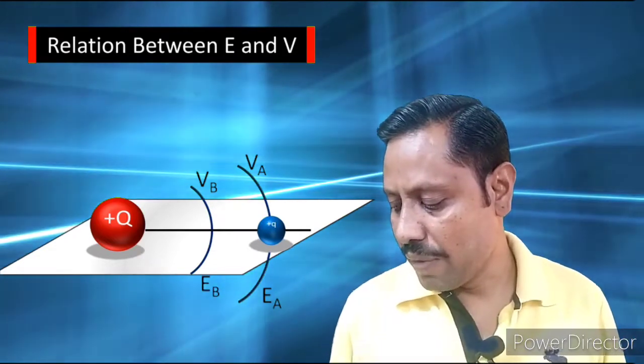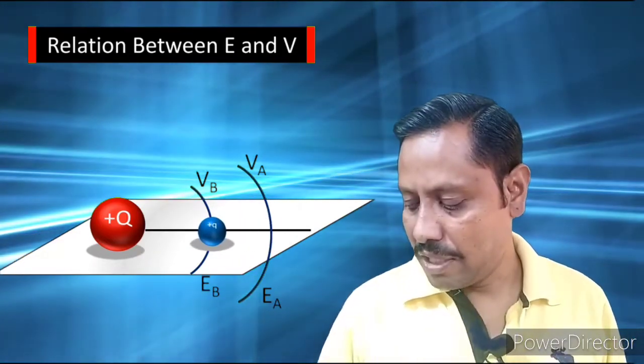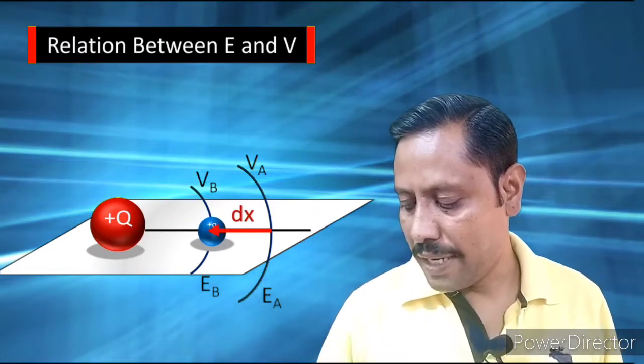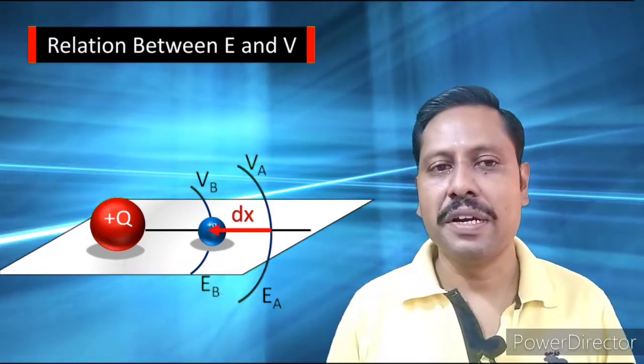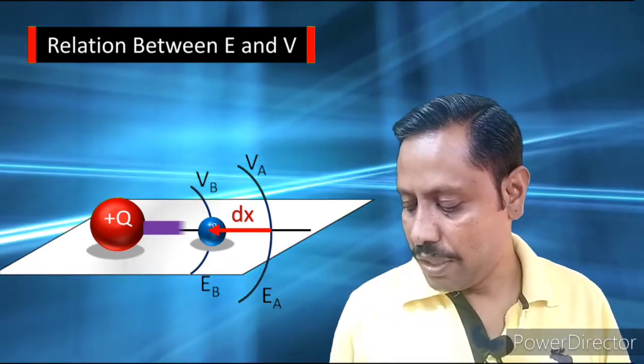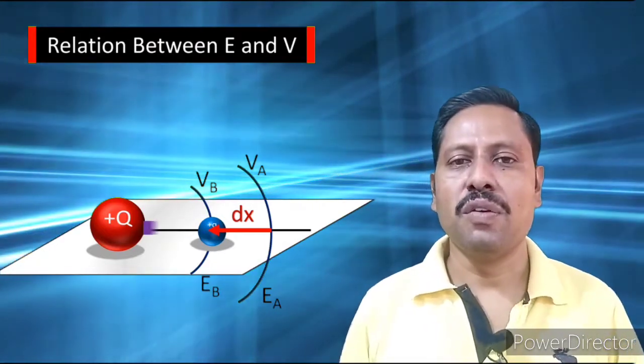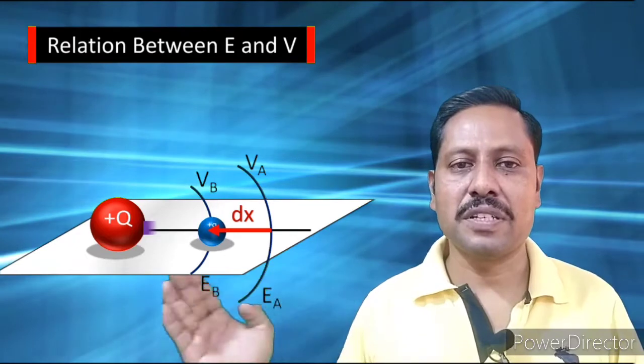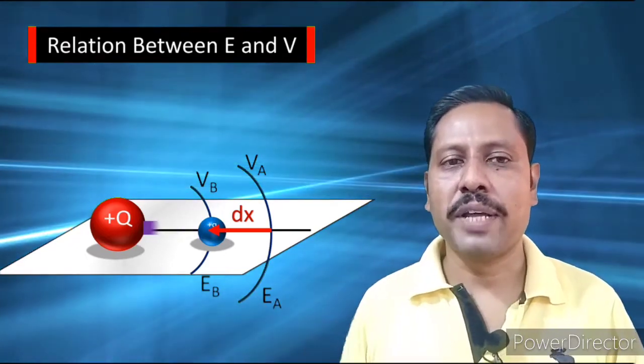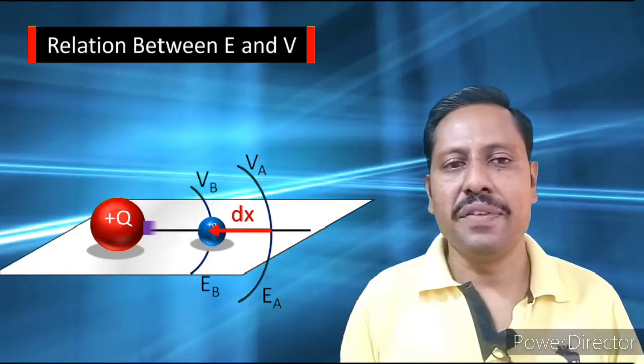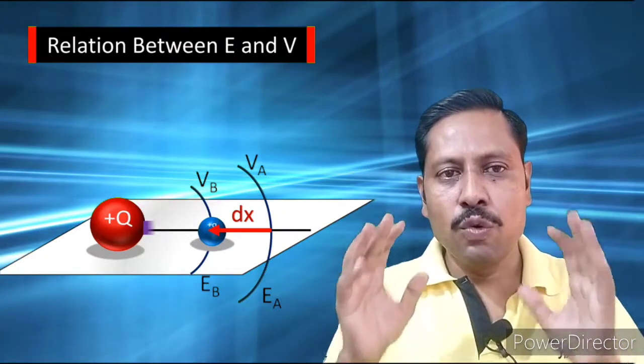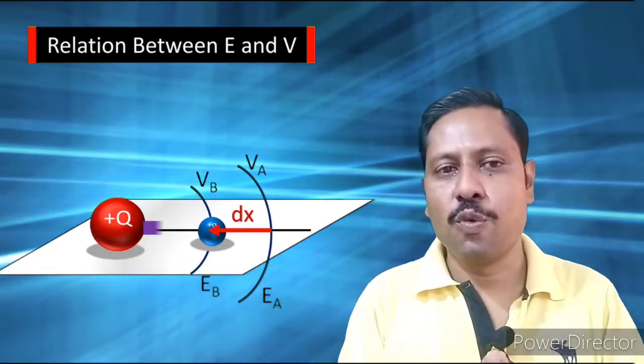When this charge is going from A to B, this capital Q will also try to repel it. Let us say we are going through a displacement DX here. So this charge, capital plus Q, will repel that charge. It is trying to move that charge from point B and shift it towards infinity. So basically, we have to do work against this repulsive force.